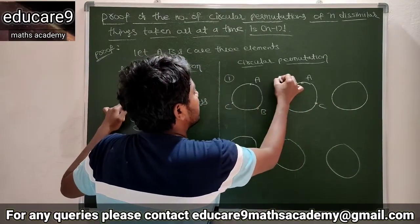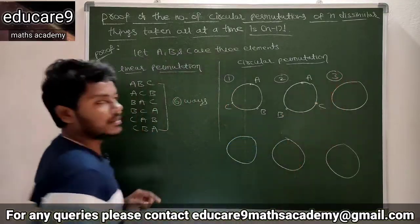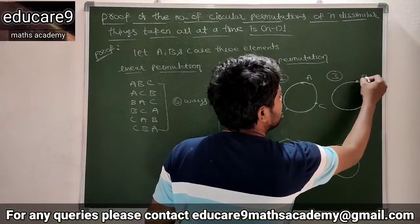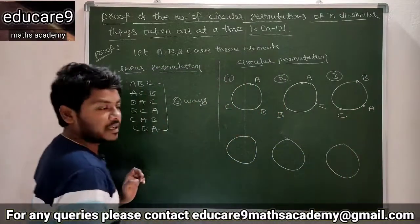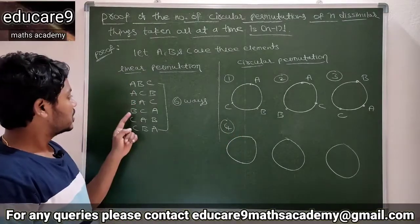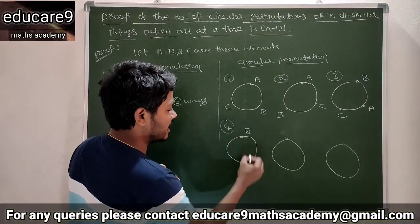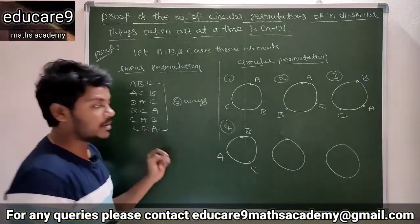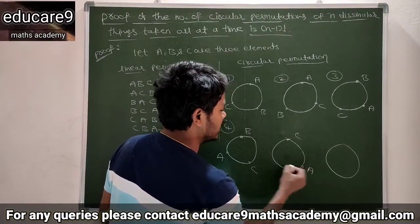This is the first one, second one. Next, third arrangement: B, A, C. So this is B and this is A and this is C. Next, fourth arrangement: B, C, A. This is B and this is C and this is A. Next one: C, A, B. This is C and this is A and this is B.